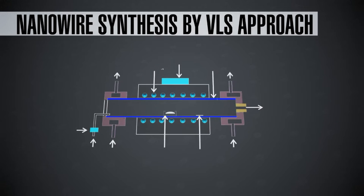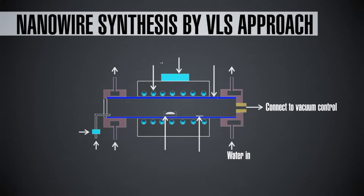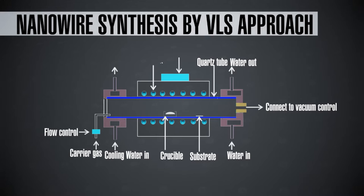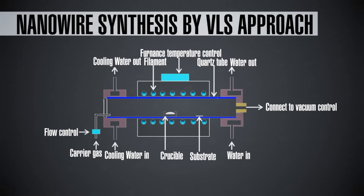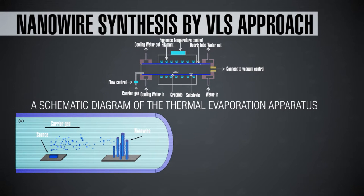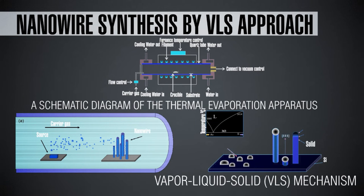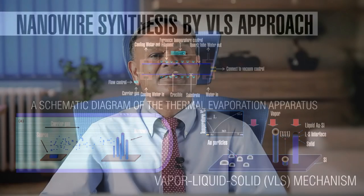Synthesis of nanowires by the vapor-liquid-solid approach: I mentioned the vapor-liquid-solid approach is very similar to CVD. Essentially, if you're trying to grow something like silicon, then you can use the same precursor that you normally use to grow silicon in the form of thin film. For example, silane mixed with hydrogen, or silicon tetrachloride mixed with hydrogen. If you're trying to grow gallium arsenide, it could be trimethyl gallium mixed with arsine. So, the natural question is: if you're using the same precursor you would normally use when you're trying to grow a thin film, then what makes it possible to grow a nanowire instead of a thin film?